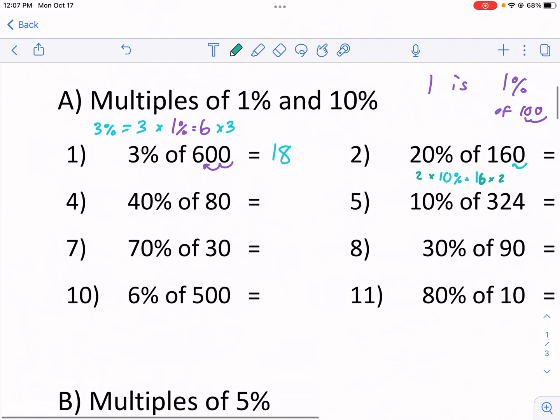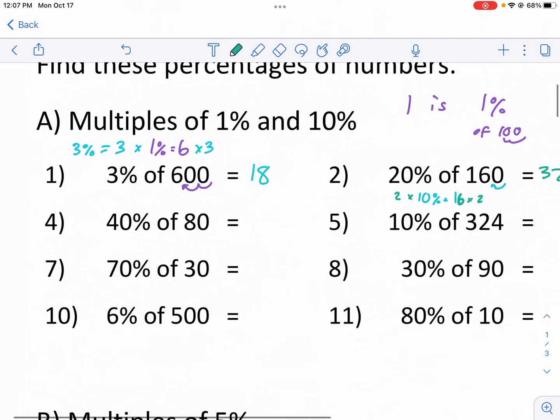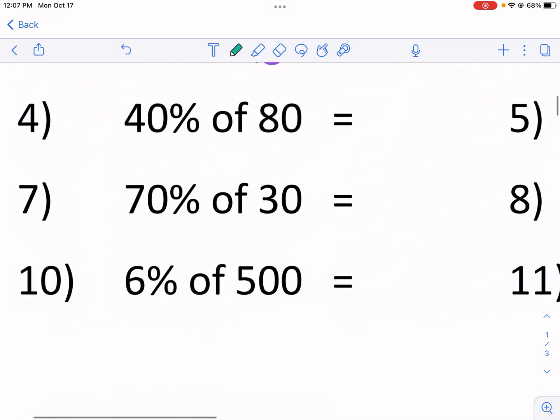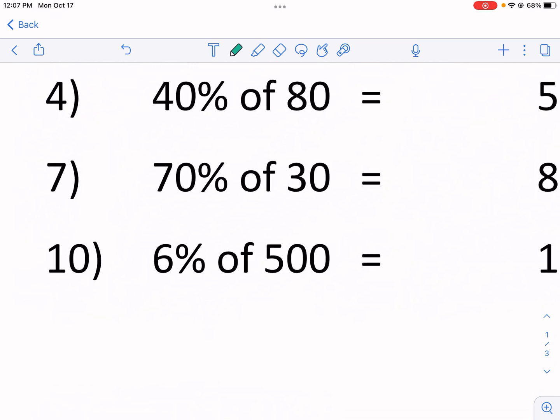Probably a good one to do it on is number 10. So this is the trick. If we write 6% as a fraction, which is like this, and then of we know is times and then 500. We have a couple things going on here. We have 6 over 1, we can write it, times 1 over 100 times 500 over 1. So we have three fractions multiplying together. And it doesn't really matter which order we go in.